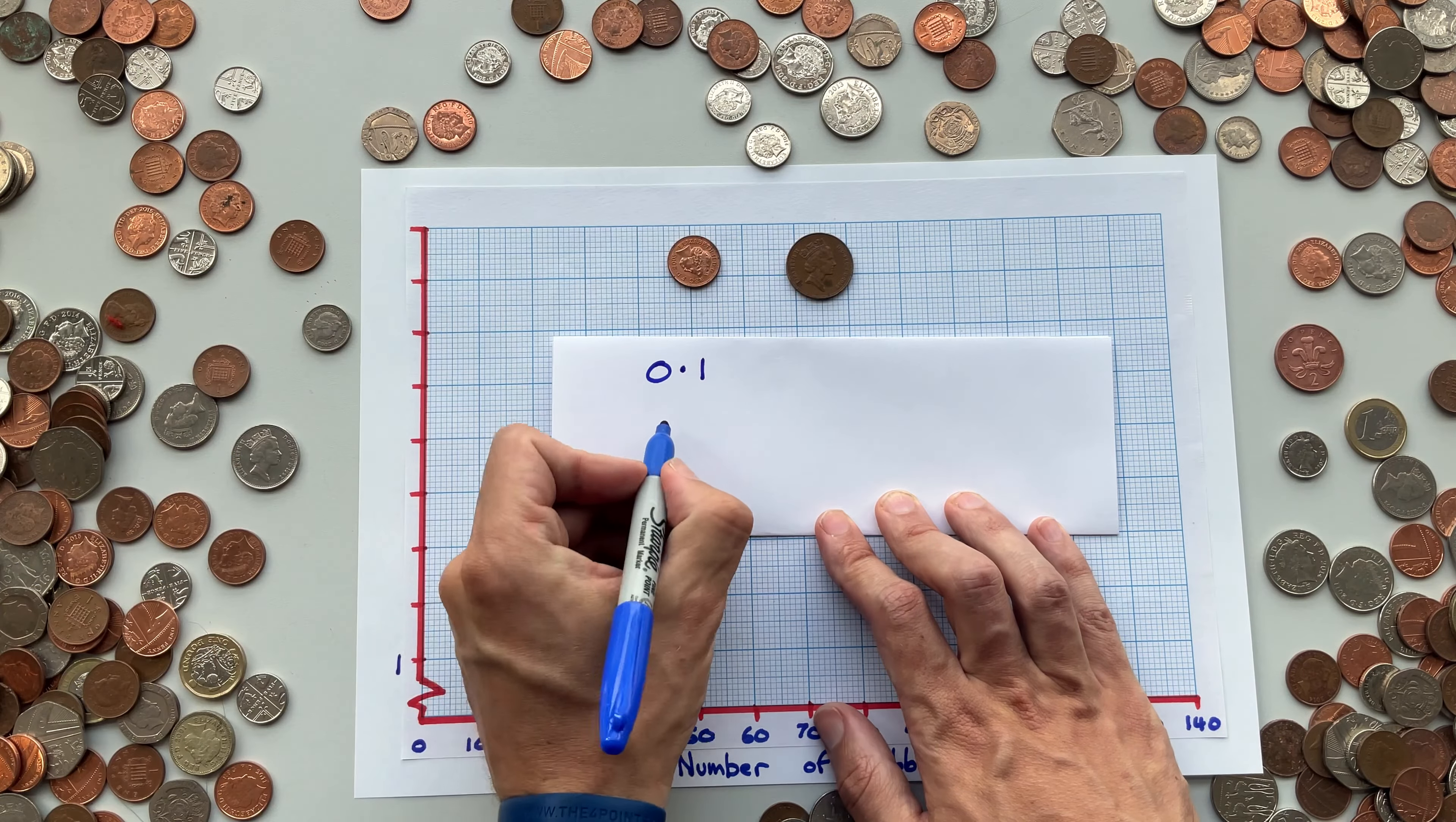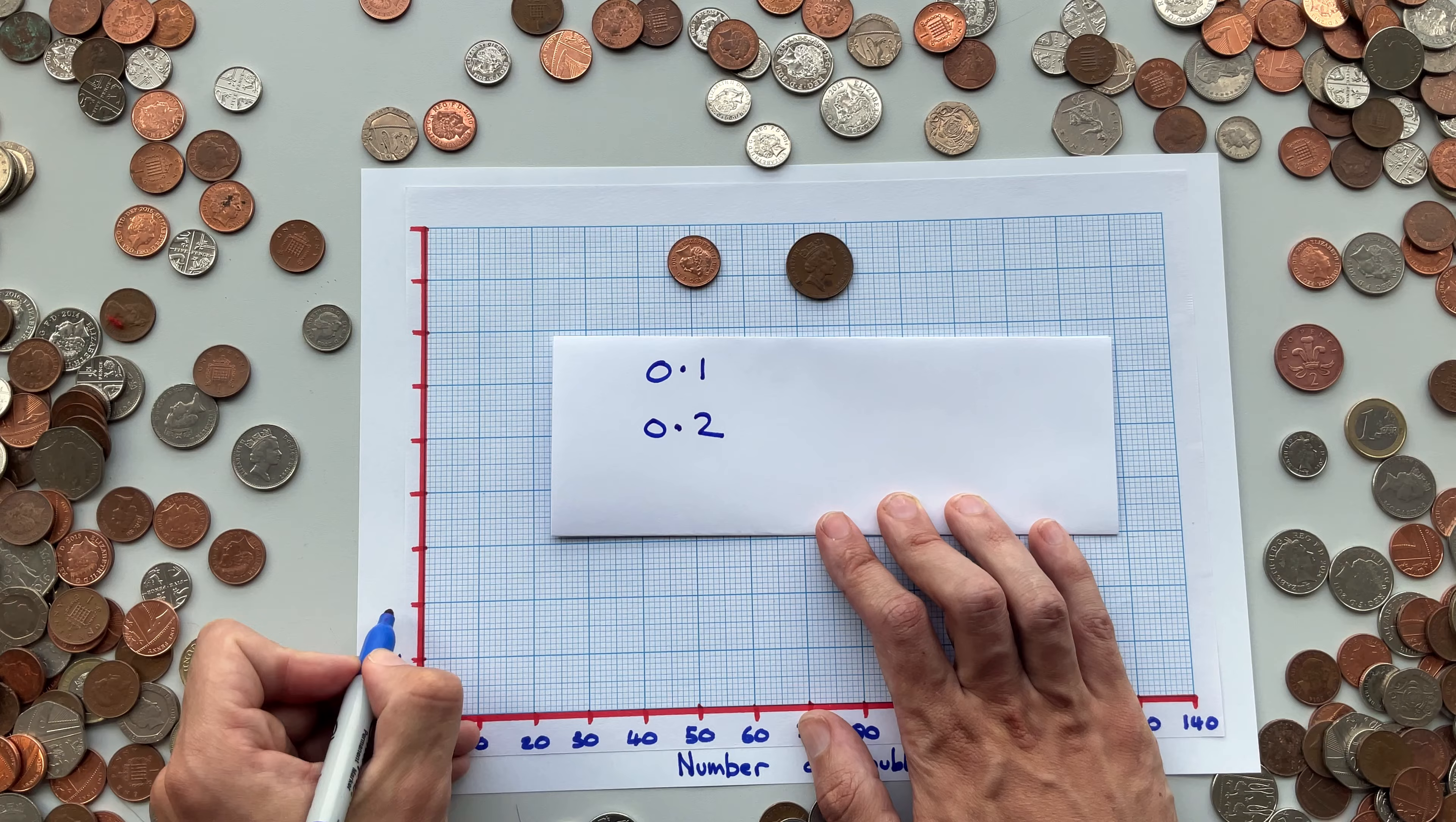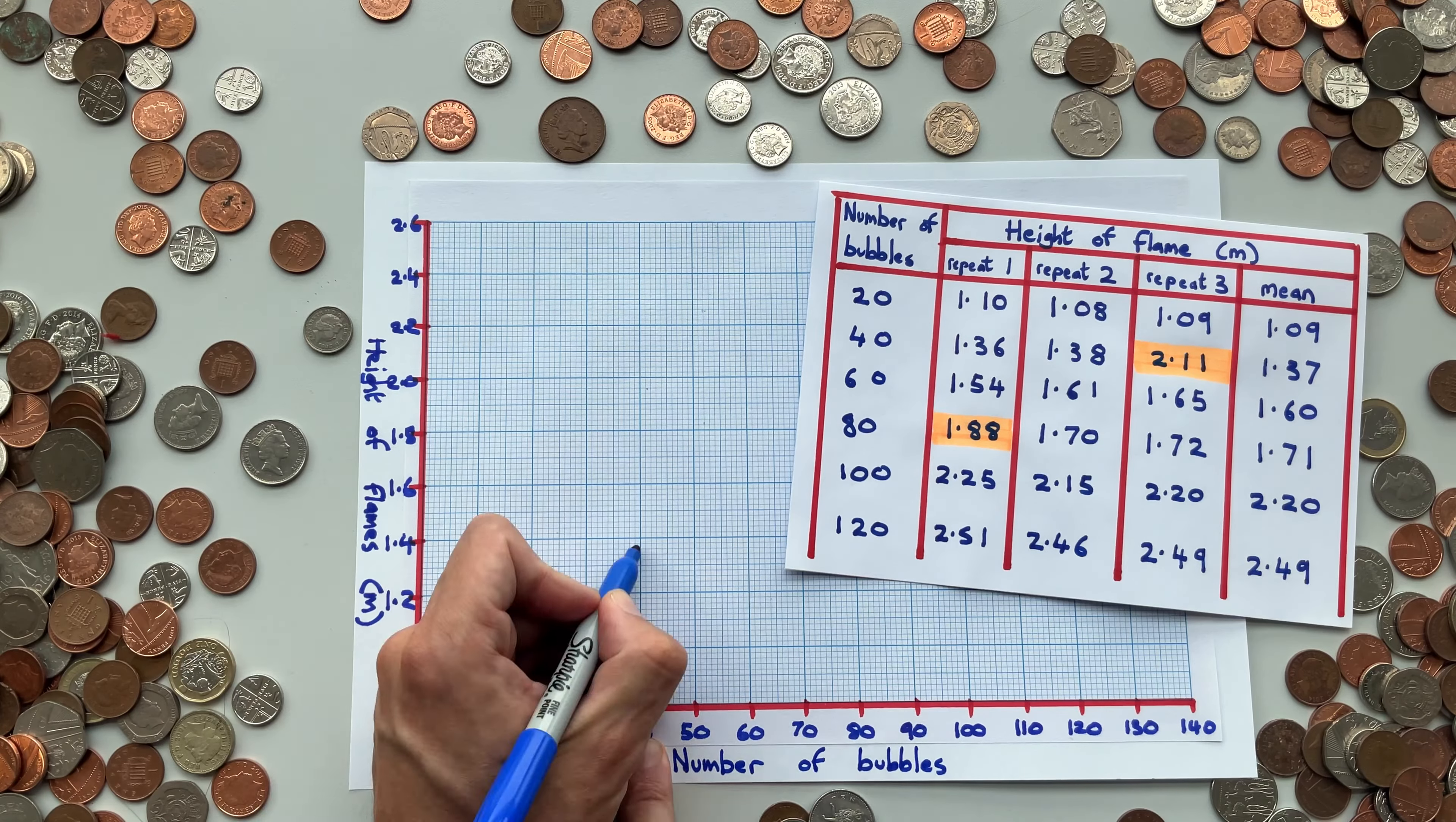Well, what about 0.2s? 1, 1.2, 1.4, 1.6, 1.8, 2, 2.2, 2.4, 2.6. We did it. Our scale is going to be 0.2s. Once you've finished your scale, you can plot your points and draw your line of best fit.